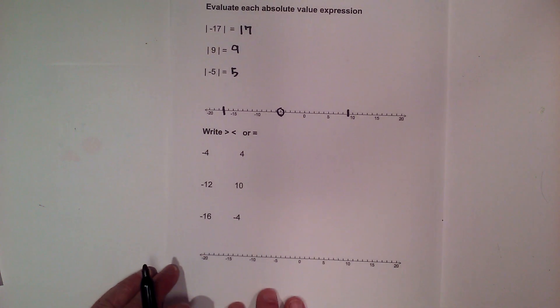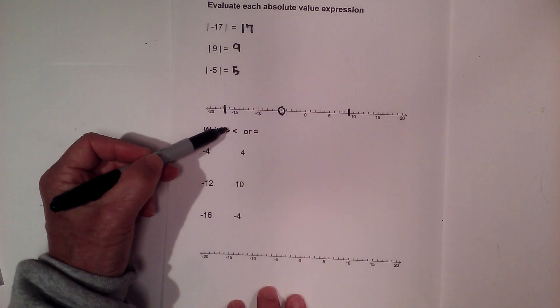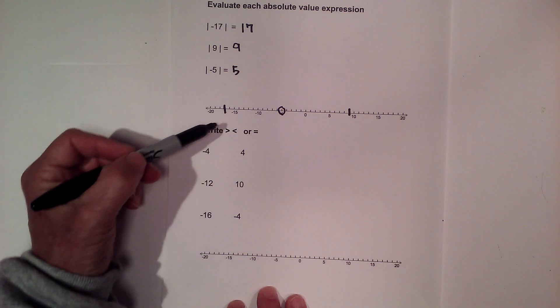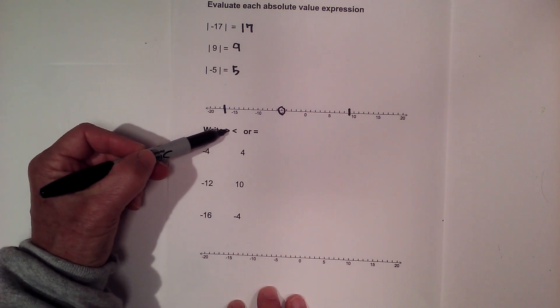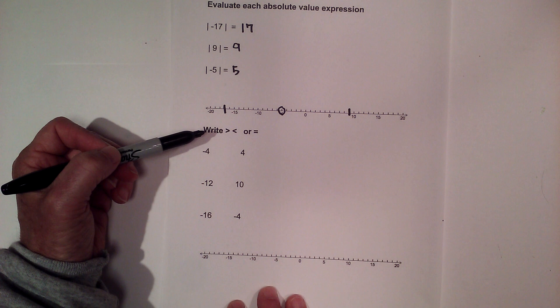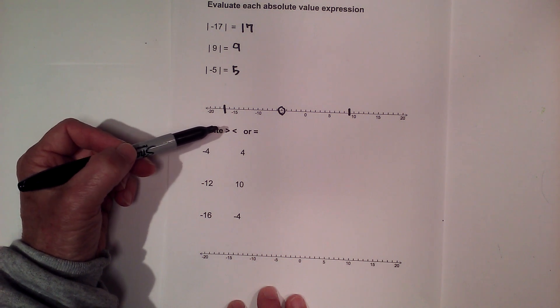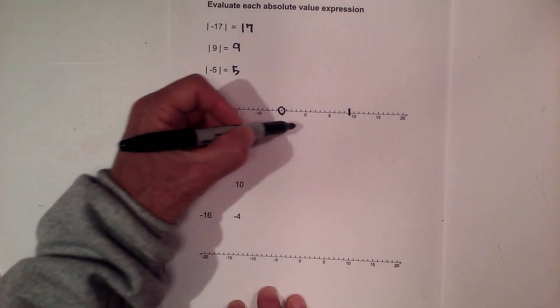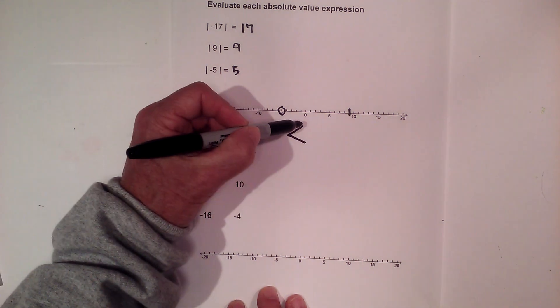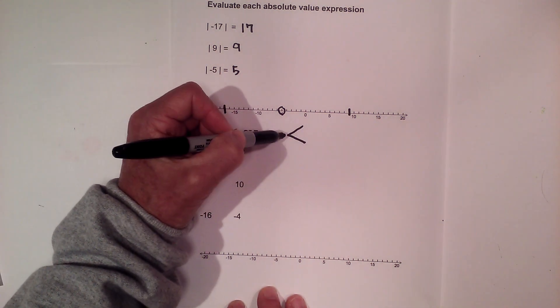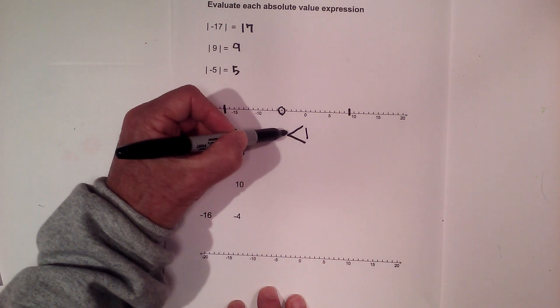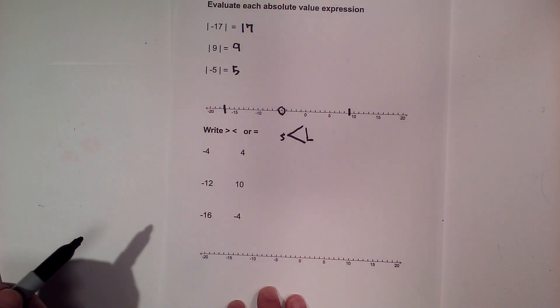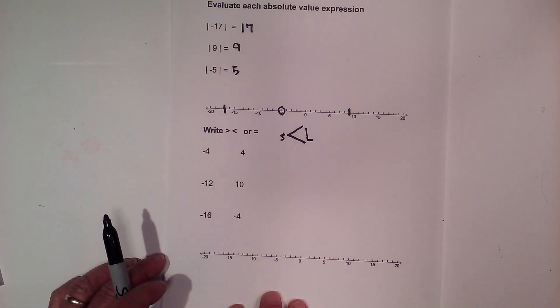Sometimes we get confused with the greater than, less than, but most people know the equal. The way I remember is, the larger side is always pointed towards the larger number. It points in the direction of the larger number. This side is larger than this side. Larger, smaller. So, let's apply this.